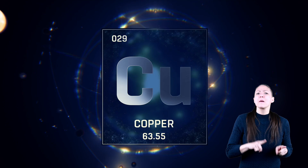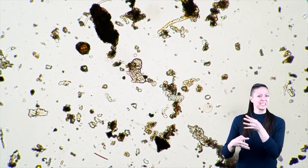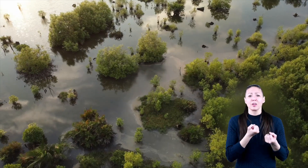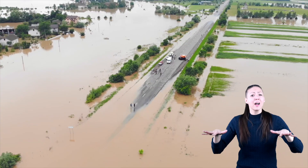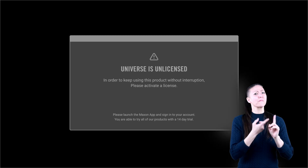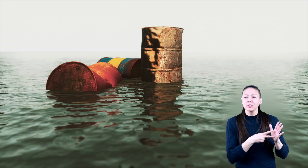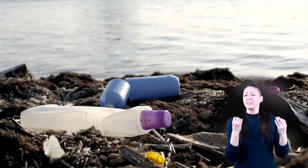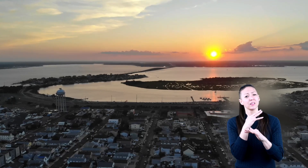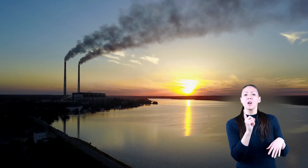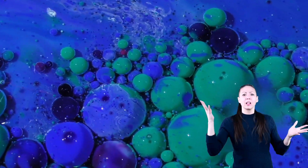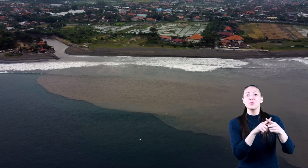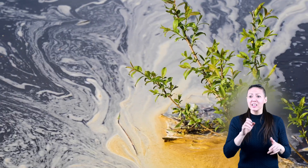Water pollution happens when different particles, chemicals, and other substances cause the water to become dirty. Pollution can be caused through natural processes like the eruption of a volcano, or silt from storms and floods. But unfortunately, most water pollution is caused by humans — sewage, fertilizers from farms, chemicals, and litter are just a few man-made causes. At times, pollution flows directly into bodies of water from places like factories. Other times it happens when rainwater mixes with unsafe chemicals.